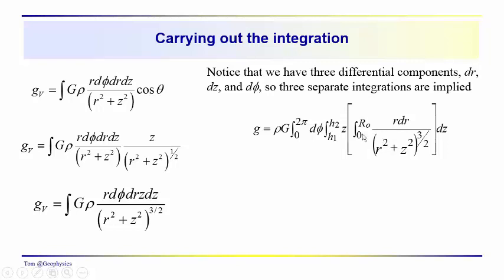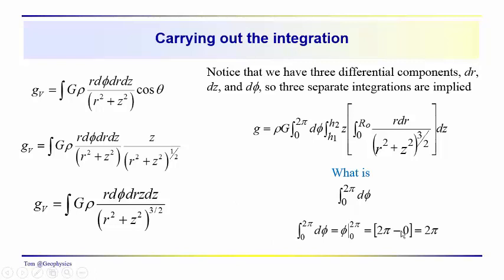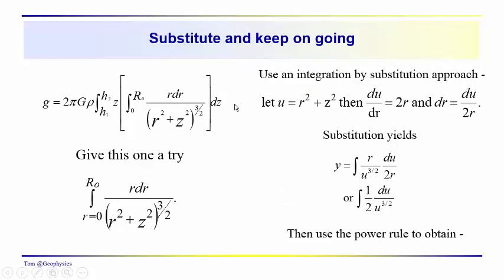I've ordered them from the outside in, so the simplest one to look at first is the integral of dφ from zero to 2π all the way around the circle. That integral evaluates to φ at the limits, giving 2π minus zero, which equals 2π. So we substitute — we've got the 2πGρ factor — and you already know what the plate formula is: 2πGρt. So we've got these two additional integrations left, and somehow we're going to come up with t, the thickness of the disk.